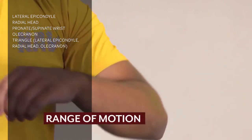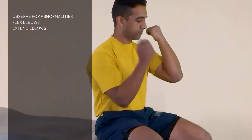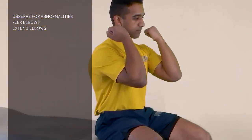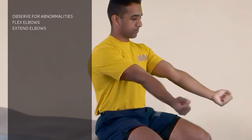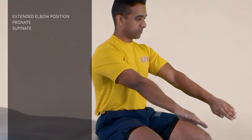Next we do range of motion. We ask the patient to fully flex both elbows and observe for any abnormality. Then we ask them to fully extend both elbows, and from that position we ask them to pronate and then to fully supinate.